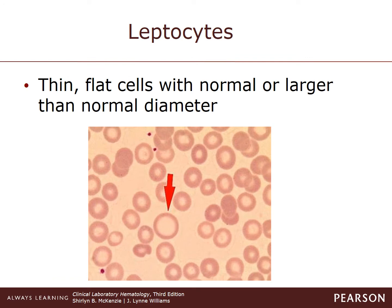Leptocytes are thin, flat cells with normal or larger-than-normal diameter. The cell diameter is normal or increased and the volume is usually decreased. The cells have an increased surface-to-volume ratio as a result of decreased hemoglobin content or increased surface area. They are usually cup-shaped like a stomatocyte, but the cup has little depth.